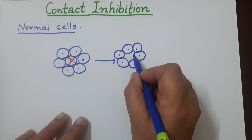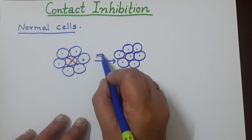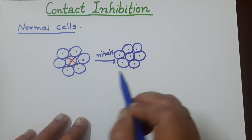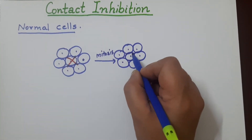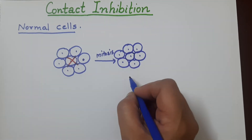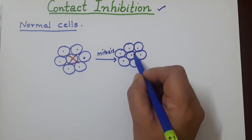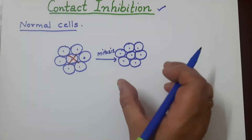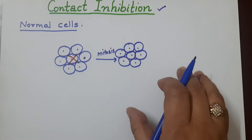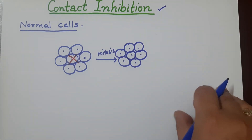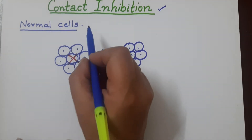So this cell will undergo mitosis just once. And why does mitosis occur just once? Because the newly formed cell has the property of contact inhibition. When this cell comes in contact with any surrounding cell, it stops further division — it does not divide further. This is the property, and it is present in normal cells.